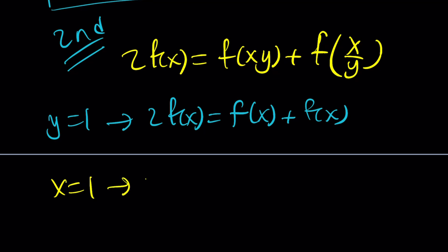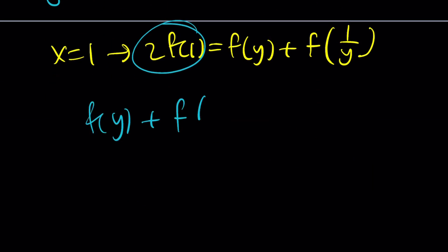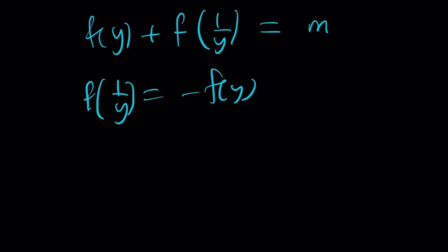Let's try x = 1. That gives me 2f(1) = f(y) + f(1/y). This is kind of interesting because this is a constant. And if f(y) + f(1/y) is a constant, normally these are functions in terms of y, so their sum should not be a constant. Let's call this m as a constant. But why is that a constant? Because something cancels out. Maybe f(1/y) is the opposite of f(y), so that their sum is 0, or their sum is a constant.